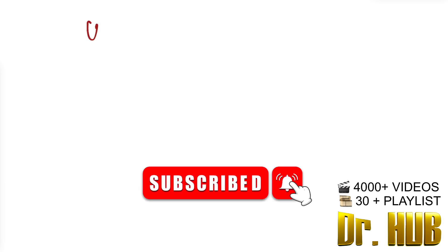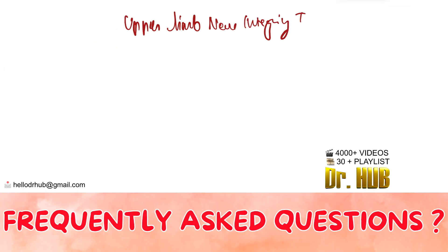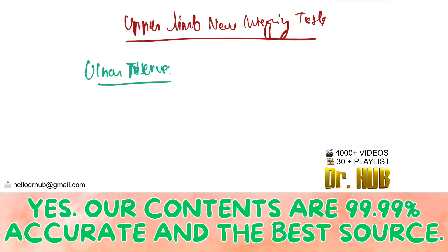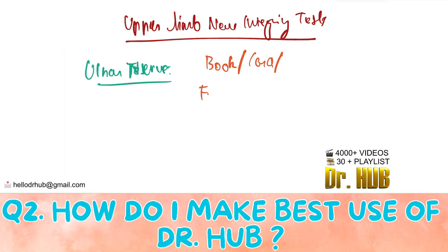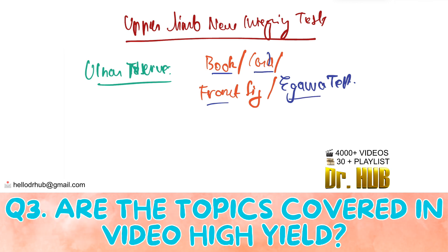Hey guys, this is Dr. Hop. Today we look at the upper limb nerve integrity test. First, we look at the ulnar nerve. Under the ulnar nerve, the test includes a book test, a card test, a Froment sign, as well as the Egawa test — so book, card, Froment, and Egawa test.